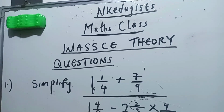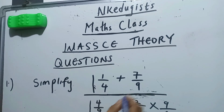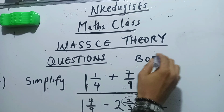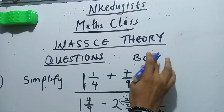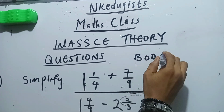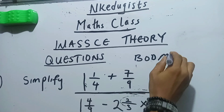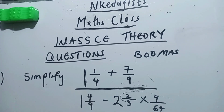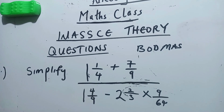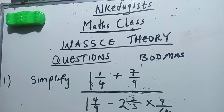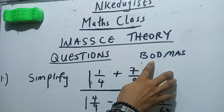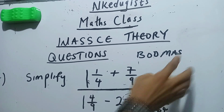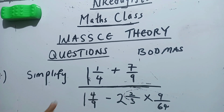To solve this math I will use what we call Board Mass. Board Mass is a principle that guides you on how to use your signs to operate. You operate with the order: Brackets first, then Division, Multiplication, Addition, and Subtraction.